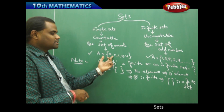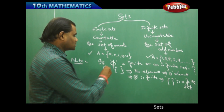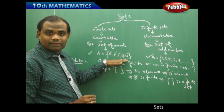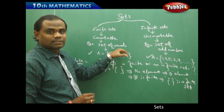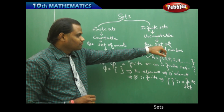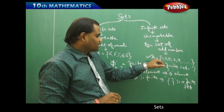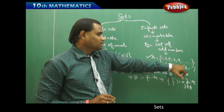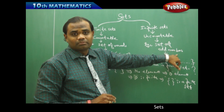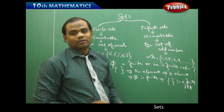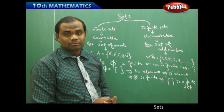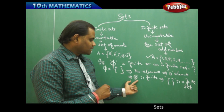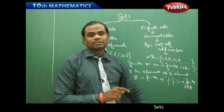The set of vowels is a finite set because the number of elements is five, and five is a finite number. The set of odd numbers is infinite because the number of elements is uncountable. A null set is a finite set because the number of elements is zero, and zero is finite.